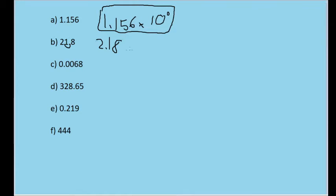But if we increase the order of magnitude by 10 by adding times 10 to the power of 1, then we're multiplying the number by 10 to increase it back to its original value.